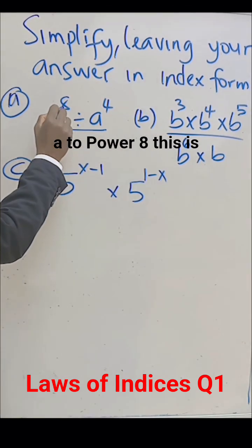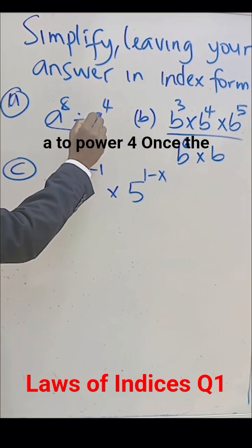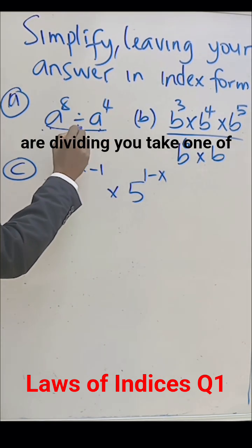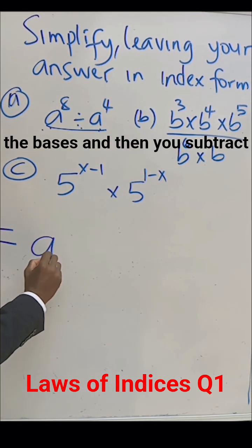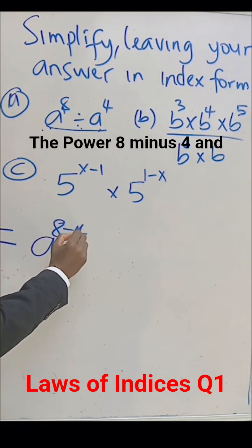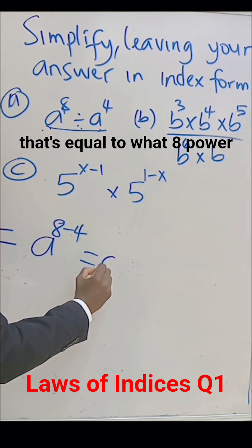This is a to power 8, this is a to power 4. Once the base is the same and you are dividing, you take one of the bases and then you subtract the power: 8 minus 4. And that's equal to what? A to power 4.